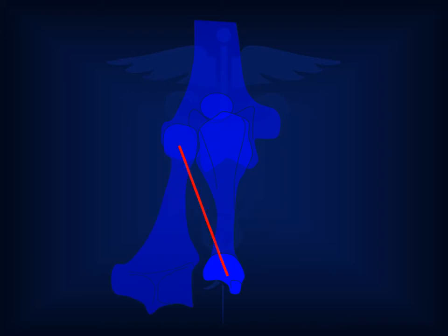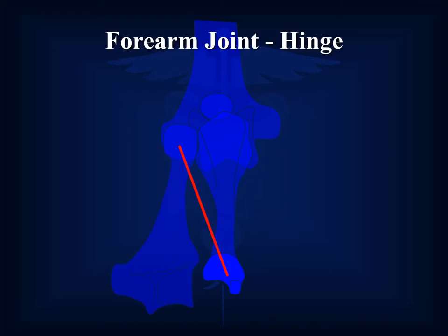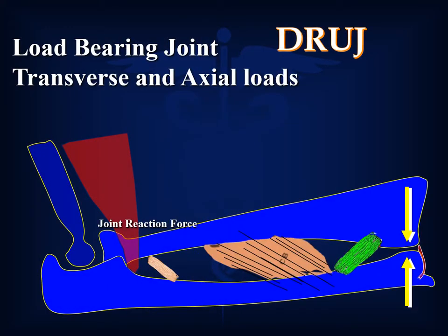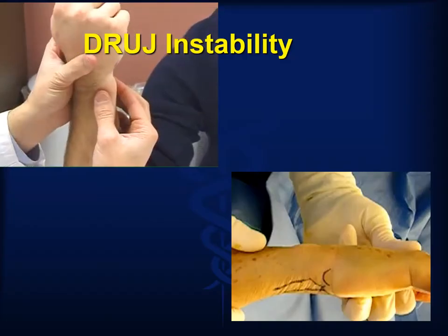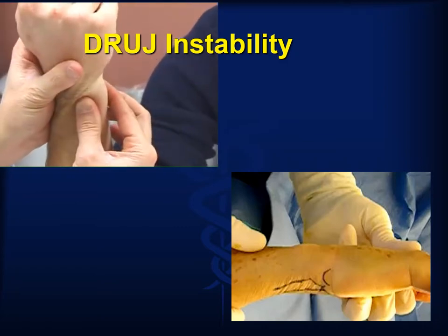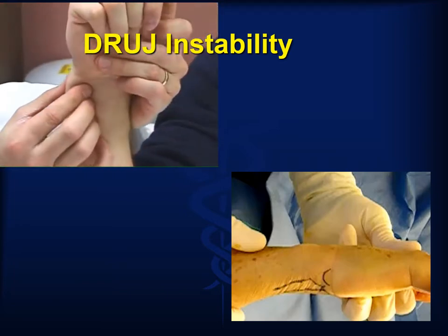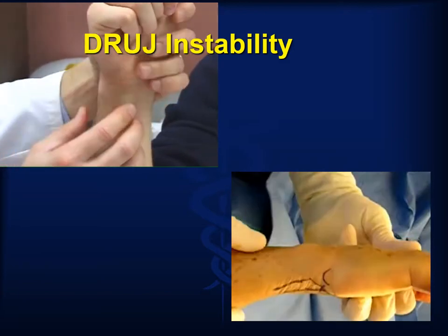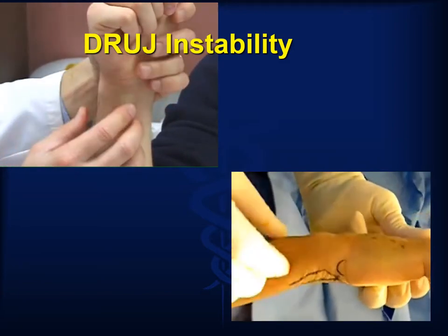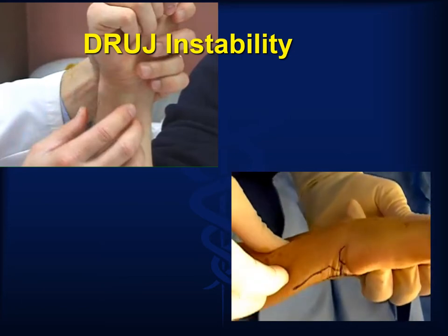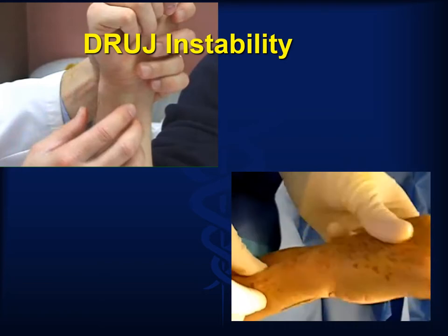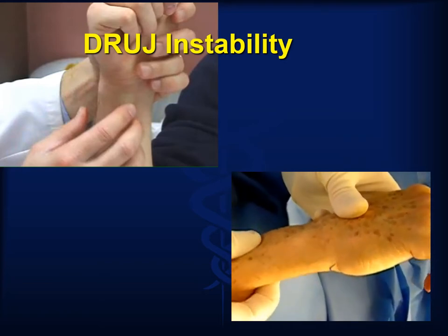The central axis of rotation is a line drawn from the distal ulna to the proximal radial head. While often dismissed as a load-bearing joint, the distal ulnar joint is subject to significant axial and transverse loading. Distal radial ulnar joint stability is therefore critical in assessing forearm interosseous membrane injuries. Testing should be done in both the pronated, supinated, and neutral positions and can range from subtle laxity to multidirectional gross instability.